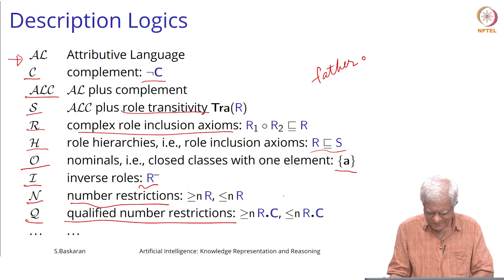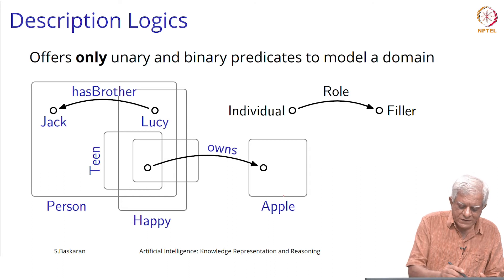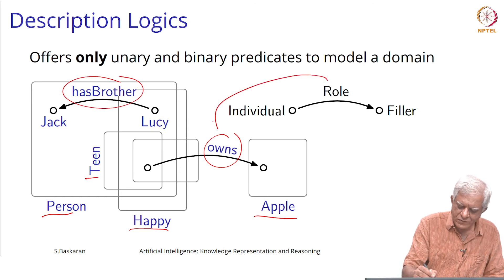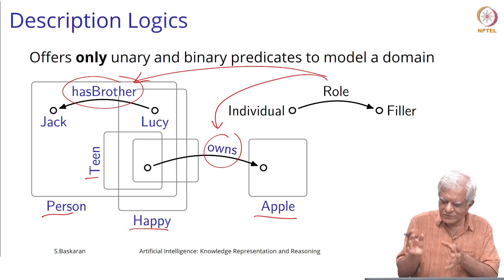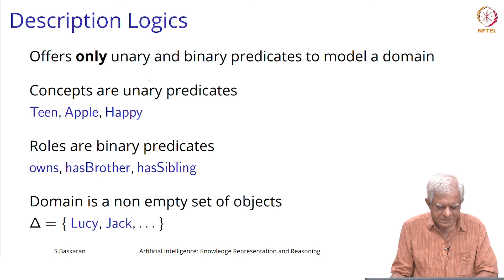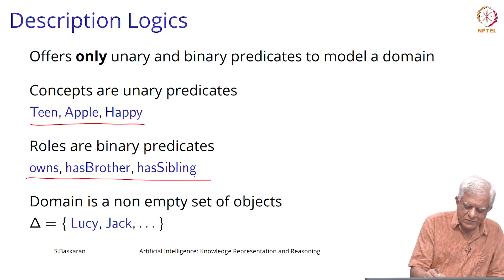Description logics allow only unary and binary predicates to model a domain. Unary predicates are shown as rectangles — for example, person, happy, apple, teen. Binary predicates are shown as arrows: owns and has-brother are both what are called roles. A role relates an individual to another resource. Individuals are drawn as circles. So concepts can be teen, apple, happy; roles can be owns, has-brother, has-sibling; and individuals can be named individuals.